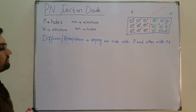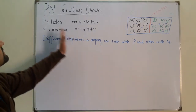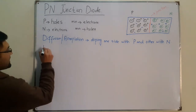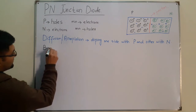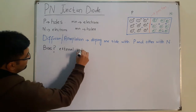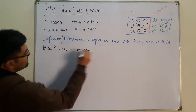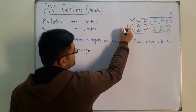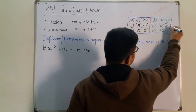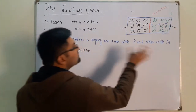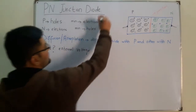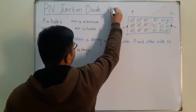This is the case of the PN junction diode when no bias is applied. Bias is the application of external voltage. We will see in the next video that we have metallic contacts on each side connected to some external voltage. Here we have no external voltage, which means we have no bias applied.